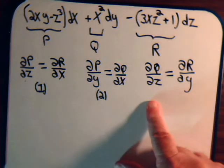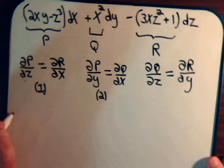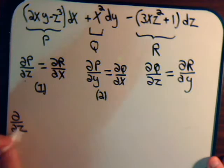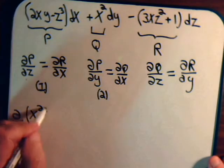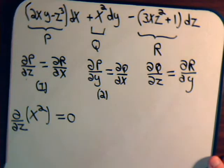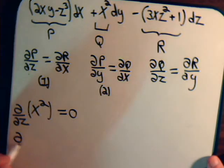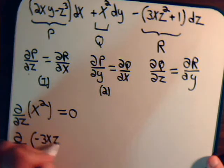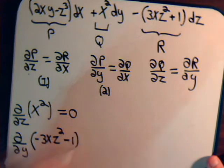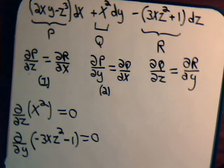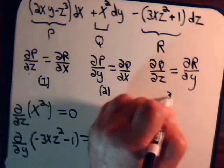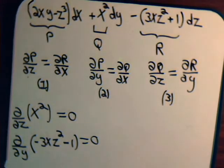For condition three, we take the partial of q with respect to z. Since q is x squared, which has no z variable, that equals 0. Then we take the partial of r with respect to y — r is negative 3xz squared minus 1, which has no y variable, so that also equals 0. All three equations are satisfied, therefore this is an exact differential.